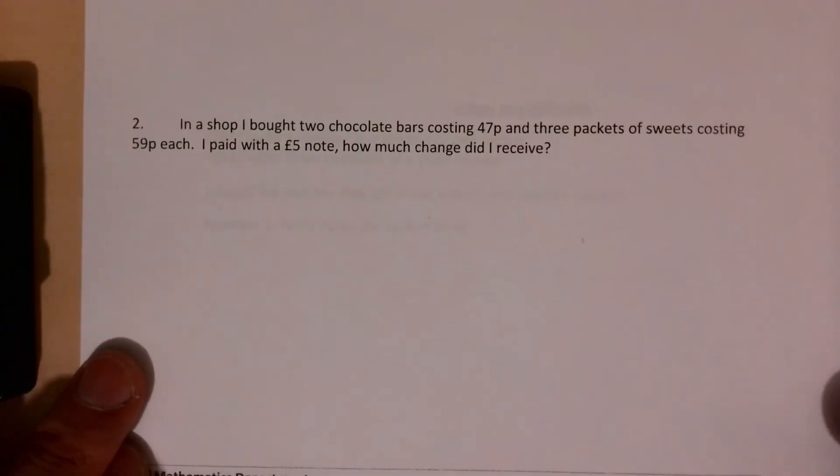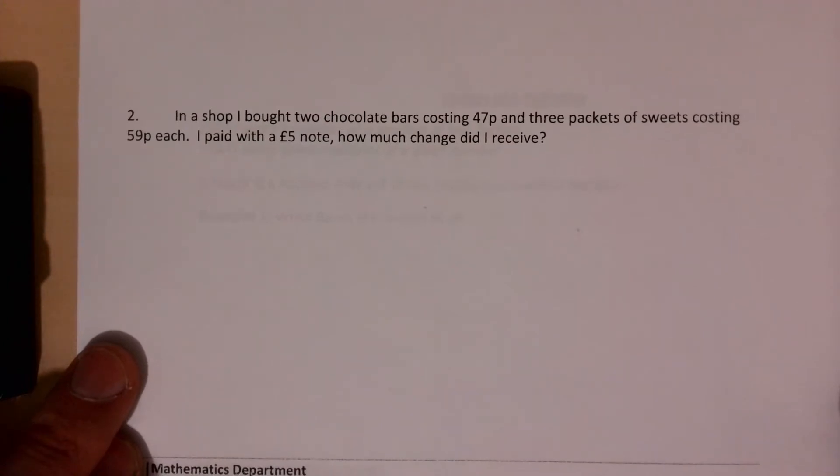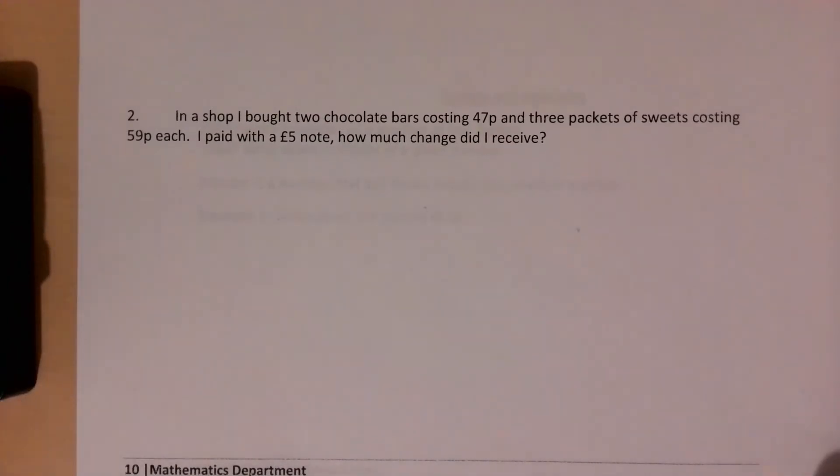In a shop I bought two bars of chocolate costing 47p and three packets of sweets costing 59p. I paid with a £5 note. How much change did I receive?